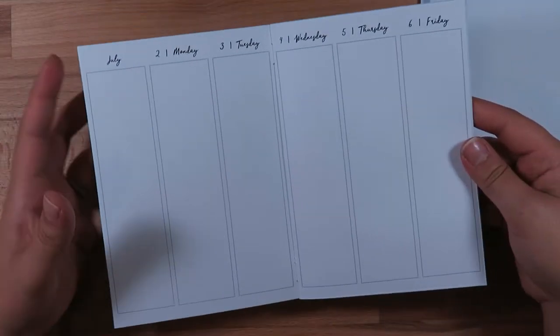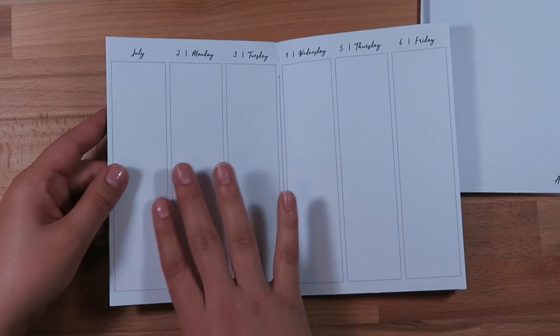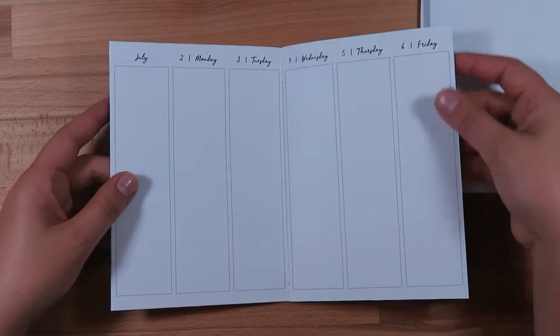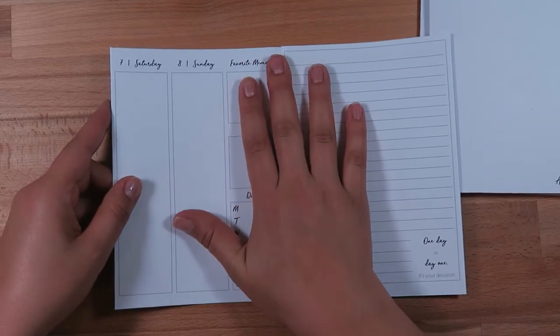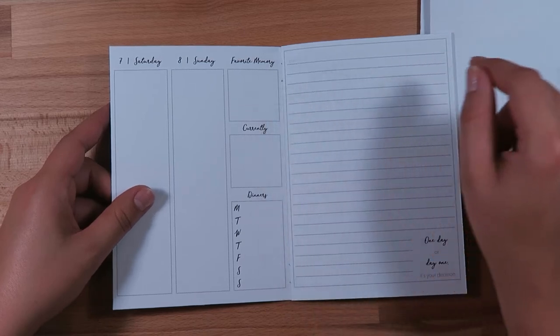Turning to the first full week, I included a sidebar section with just the month name at the top and full sections. The lines are dotted, so they're very similar to the Erin Condren feel.